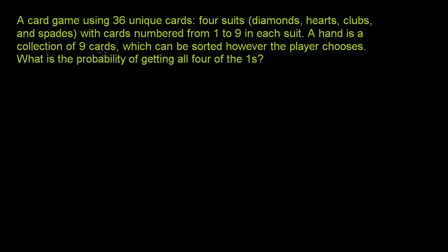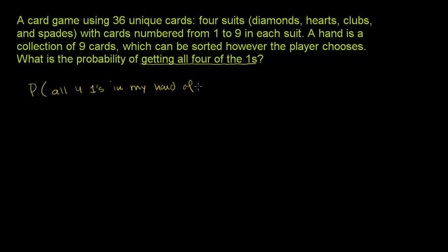A hand is a collection of nine cards, which can be sorted however the player chooses. So they're essentially telling us that order does not matter. What is the probability of getting all four of the ones? So they want to know the probability of getting all four ones in my hand of nine.